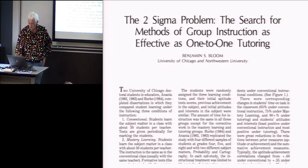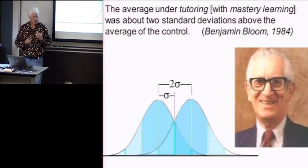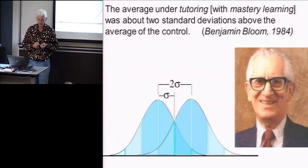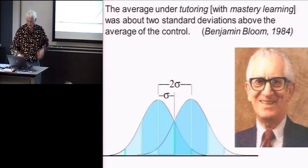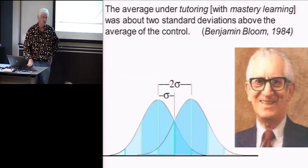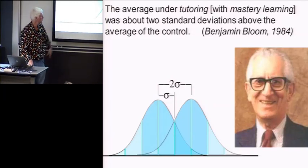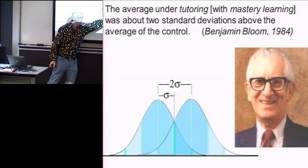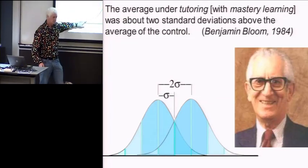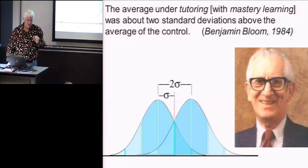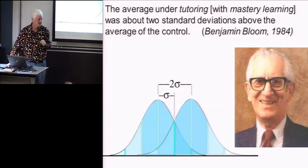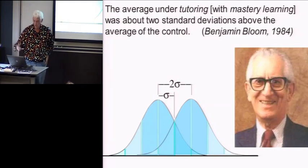Instead, Hal gave me the best answer I ever got, which he said, you only have to read one paper, which is this paper by Benjamin Bloom from 1984 on what he calls the Two Sigma Problem, in which he says that if you give people individual tutoring with mastery learning, which means you keep tutoring them until they get it, rather than tutoring them until it's time for the test, then the results are two standard deviations above the average of the control group.